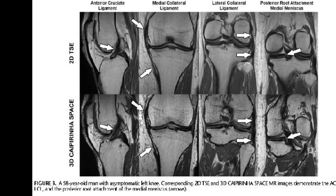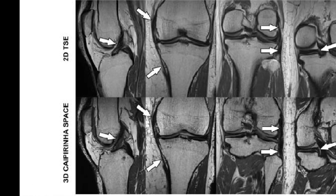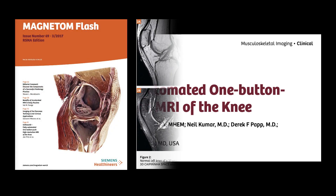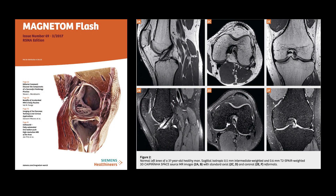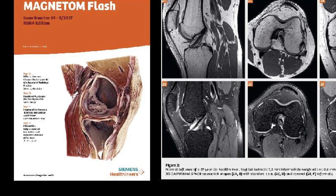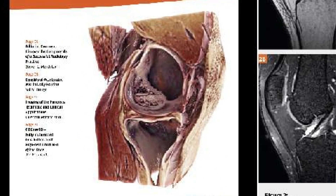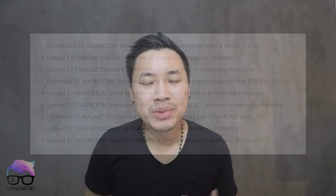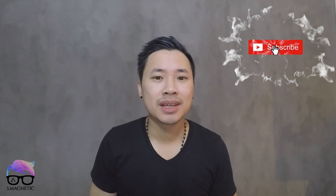The link is in the description below so you can check it out for further reading. This is another paper from Jan Fritz and his team from Johns Hopkins University, published in Magnetom Flash 69 in 2017. I'll put the link in the description below, along with the link for downloading the protocol and the exam card file for free, so you can test this out on different scanners. That's the end of my video — thank you for watching, please subscribe, comment, and like. See you next time!